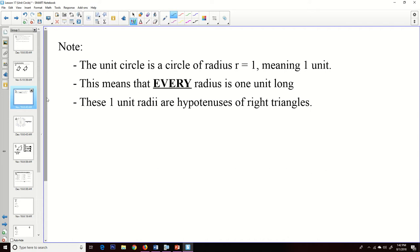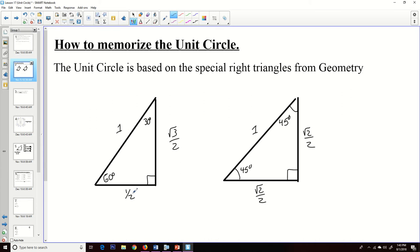So just a couple notes here. The unit circle, the reason they call it a unit circle is because it has a radius of 1, 1 unit. And so now that means every single radius is 1 unit long, and these 1 unit radii are hypotenuses of right triangles, and these special right triangles that we have. So you'll see these numbers, 1, half, square root of 3 over 2, and square root of 2 over 2 happen often. They're going to be repeated, and those are just the numbers that you're going to have to remember to memorize.